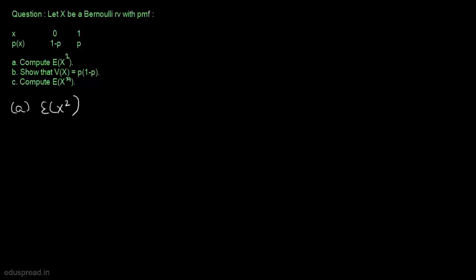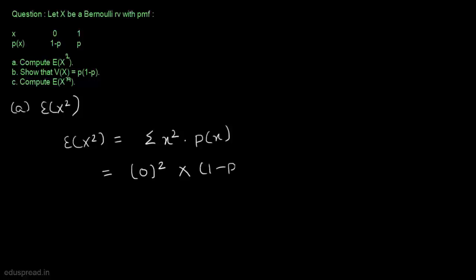This should not be difficult. We know that expected value of x square is equal to summation x square multiplied by probability of x. And this is equal to 0 whole square multiplied by 1 minus p, plus 1 whole square multiplied by p. And this is equal to p. So the expected value of x square is equal to p.